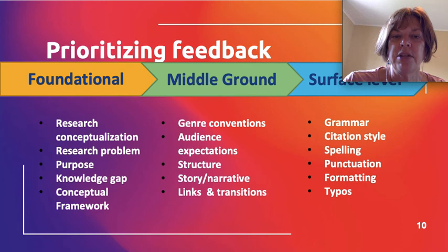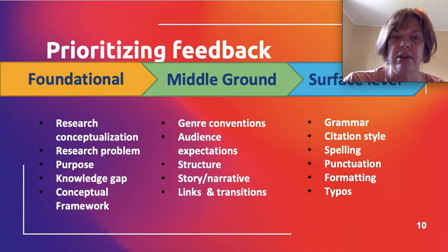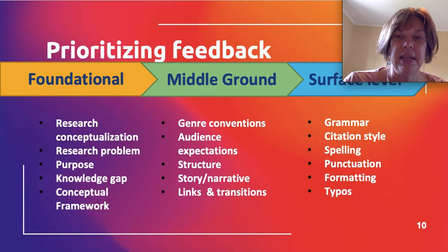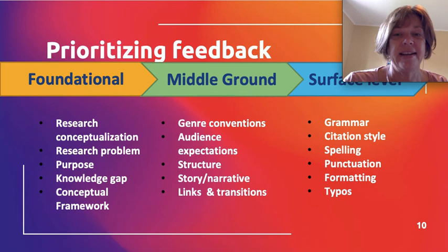I want to break down the kind of feedback you could provide and prioritize it. The three layers are foundational, middle ground, and surface level. Often, when people give feedback on writing, they begin with the surface level issues — the grammar, the spelling, the typos. What I would suggest, particularly at the beginning stages of a project — actually at any stage — is to focus on the foundational elements.